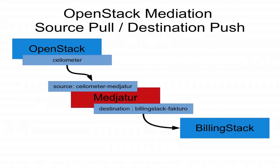The mediator basically takes the raw Ceilometer data and wants to turn it into something useful in terms of financial data. This shows one of the proposed mediation processes, where you're pulling data from a source like Ceilometer, taking it into the mediation process or script, and pushing it into BillingStack.